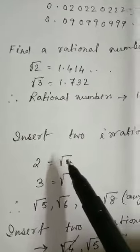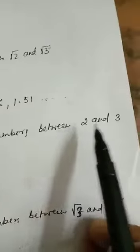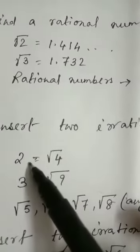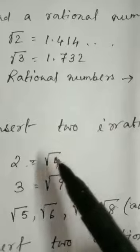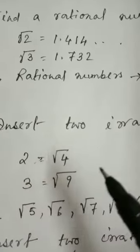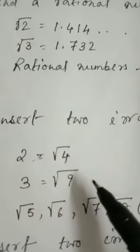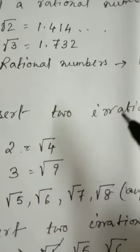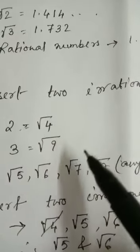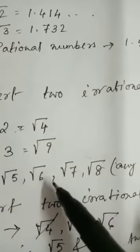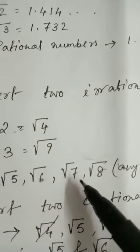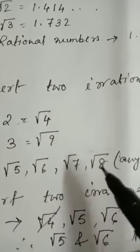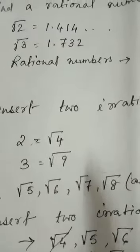Insert two irrational numbers between 2 and 3. Two irrational numbers. So 2 you can write as root 4, which equals 2, and 3 you can write as root 9. So between root 4 and root 9, you take any two irrational numbers. There are other numbers like root 5, root 6, root 7, root 8 — any two numbers you can take among these.